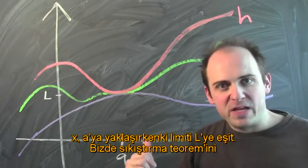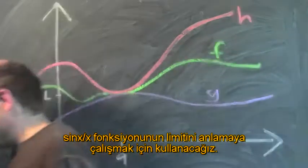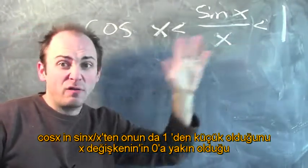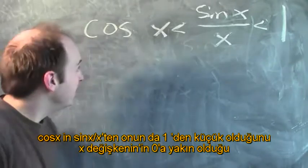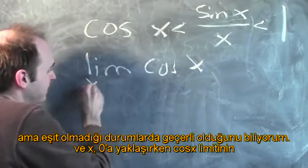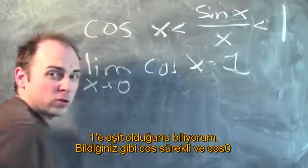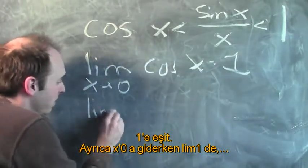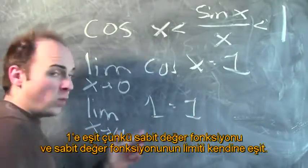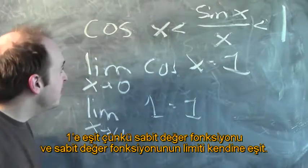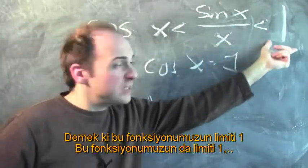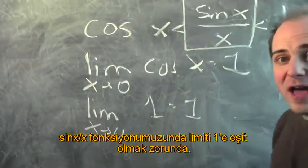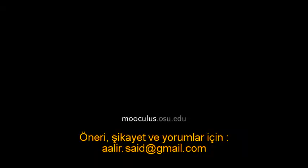Now we're going to use the squeeze theorem to understand the limit of sine x over x. We know that cosine x is less than sine x over x, which is less than 1, for values of x close to but not equal to 0. The limit of cosine x as x approaches 0 is equal to 1 — because cosine is continuous and cosine of 0 is 1. Also, the limit of 1 as x approaches 0 is equal to 1, because the limit of a constant function is that constant. So the limit of cosine x is 1 and the limit of 1 is 1, and by the squeeze theorem, the limit of sine x over x is also equal to 1.